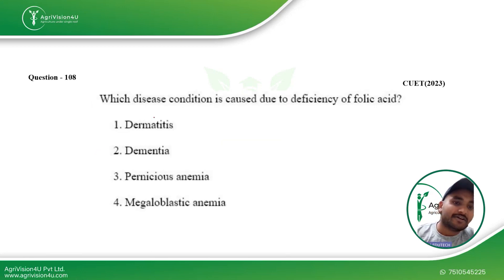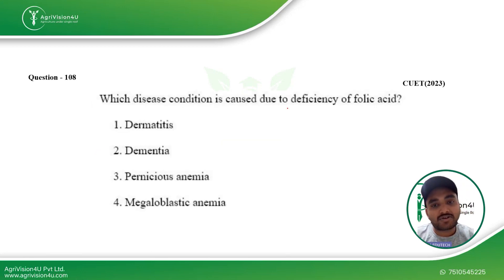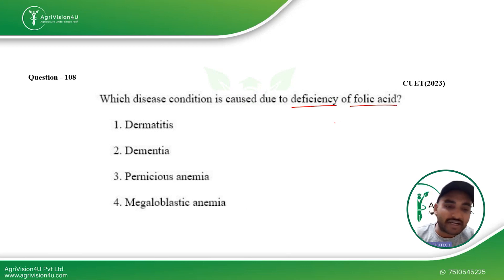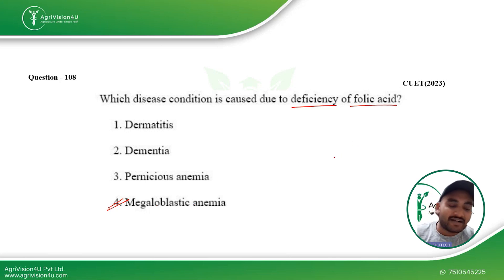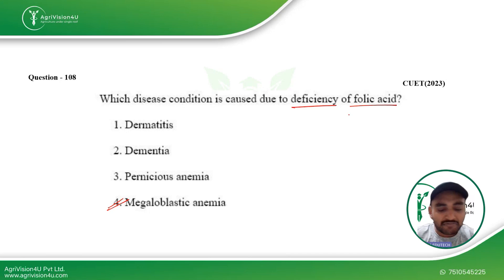The next question asks which disease condition is caused due to deficiency of folic acid. This is a straightforward question — megaloblastic anemia is caused by deficiency of folic acid. It is a deficiency disease and one of the easier questions in the paper.